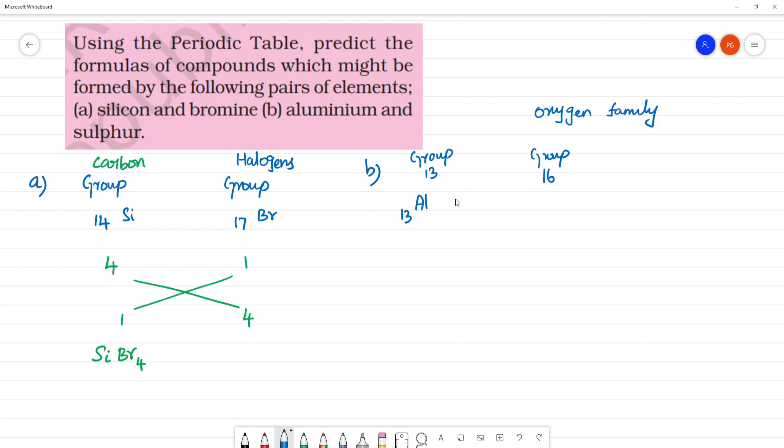So, in group 13, what will be the valency? This will be having the valency plus 3. And this will be having the valency minus 2. Oxygen family, minus 2.